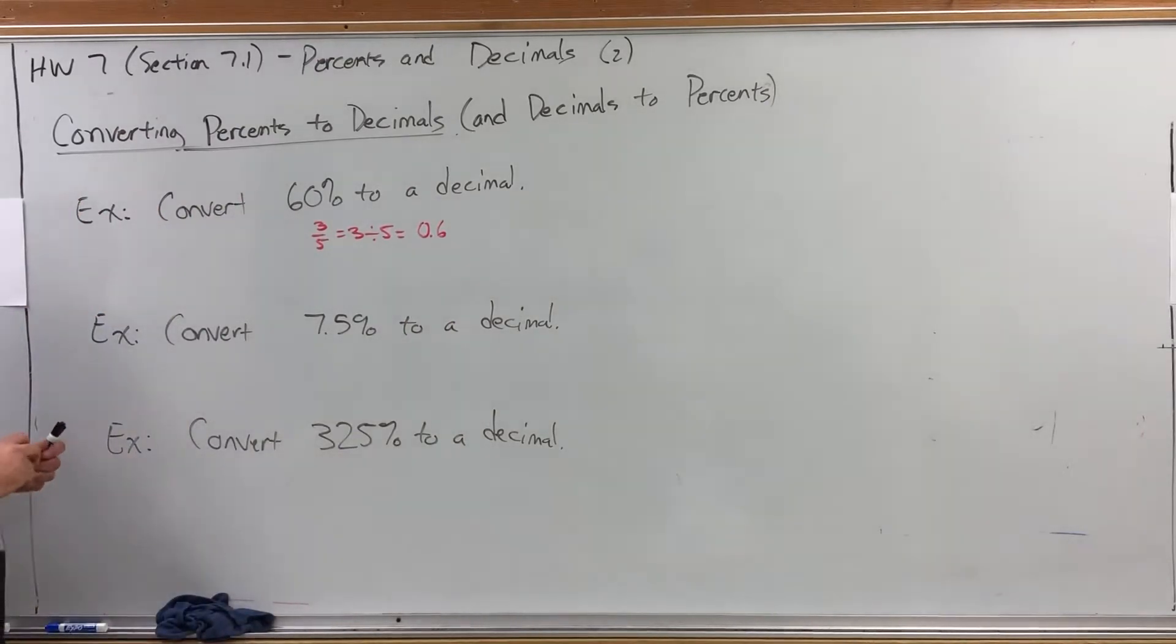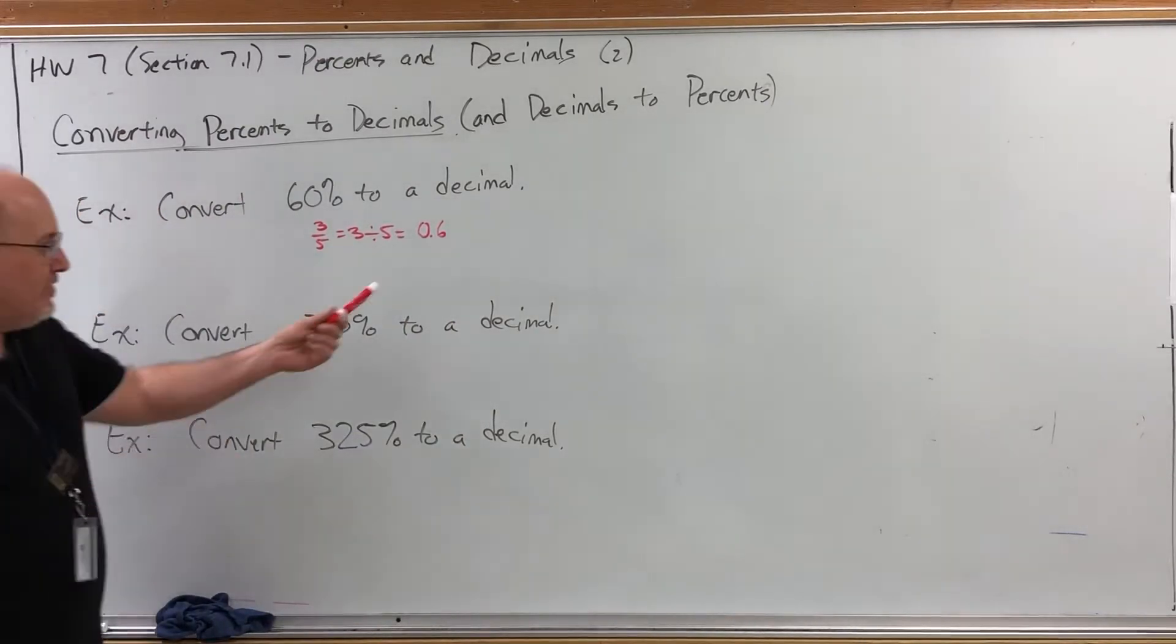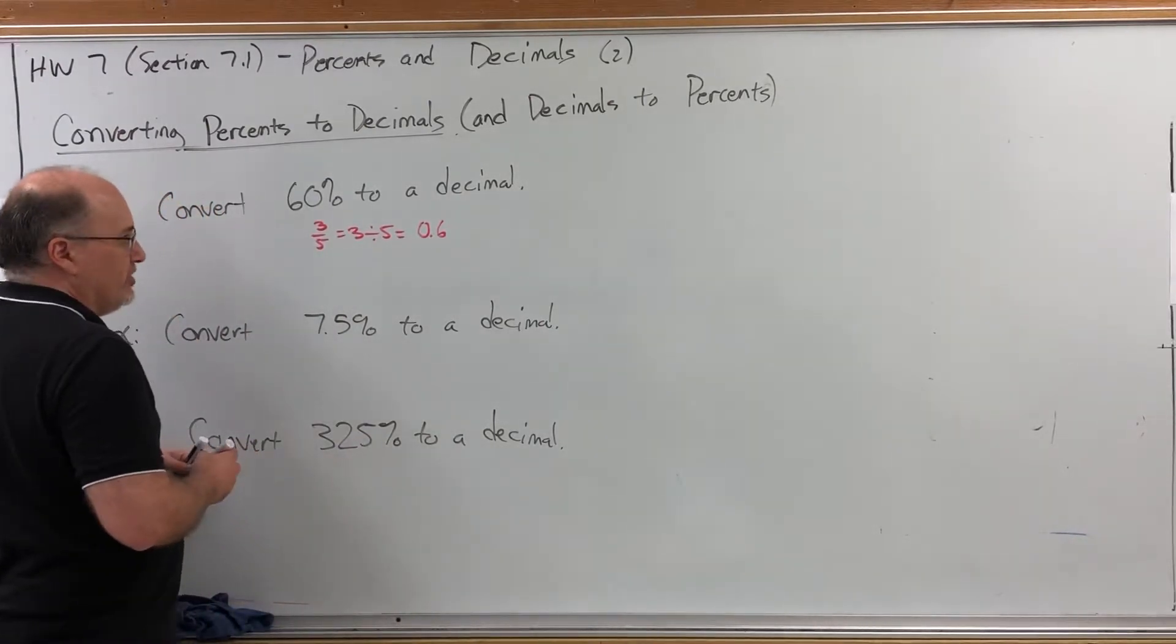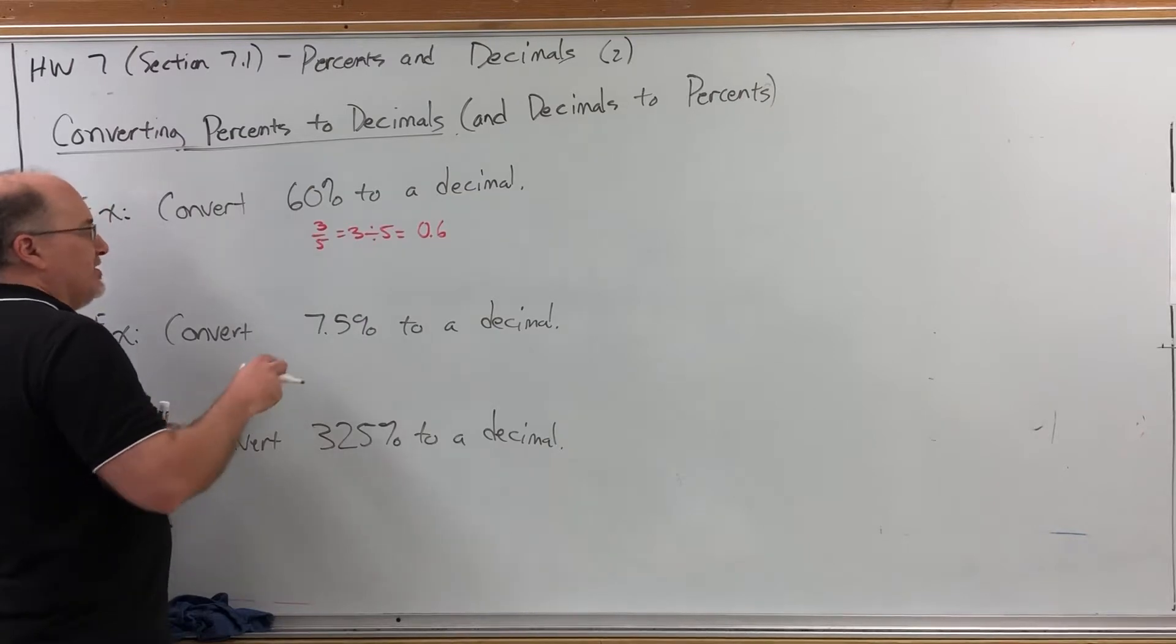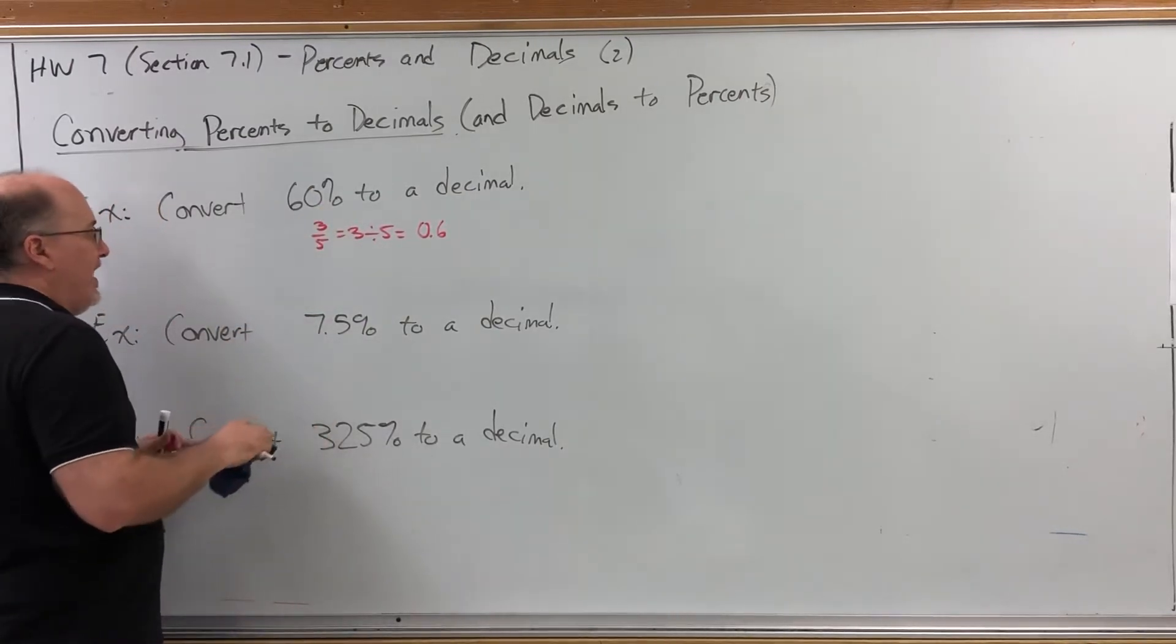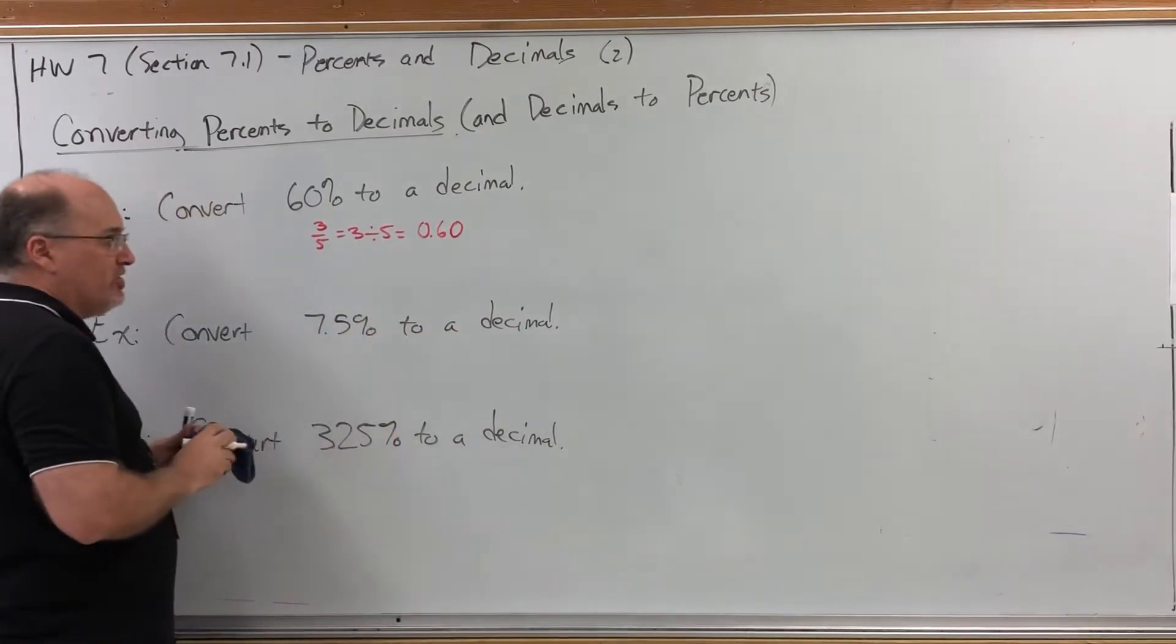And then suddenly it's like, wait, couldn't we have gotten that without going through the fraction? And the answer is yes, by keeping track of the original decimal place. In 60% the decimal is to the right of the zero. And as a decimal, 60% is 0.60.